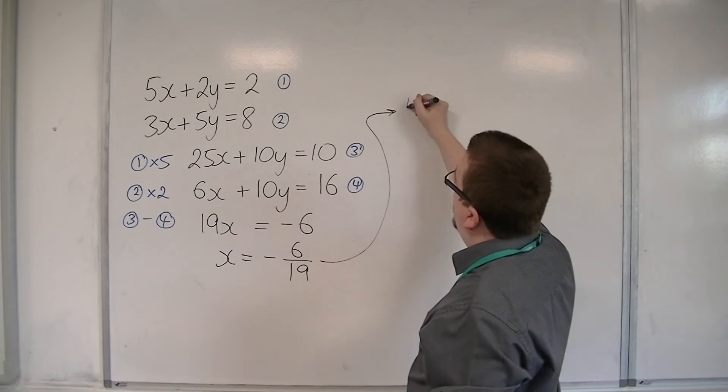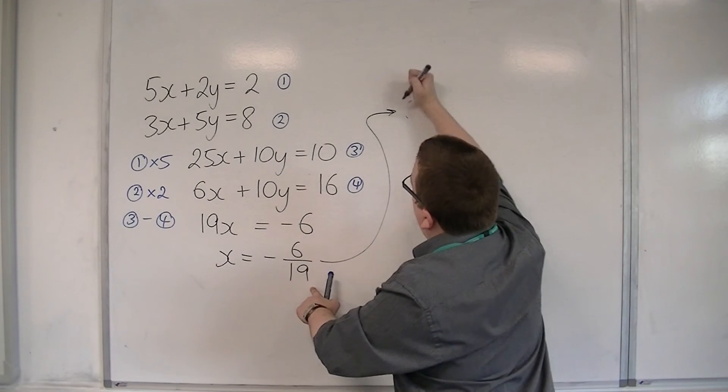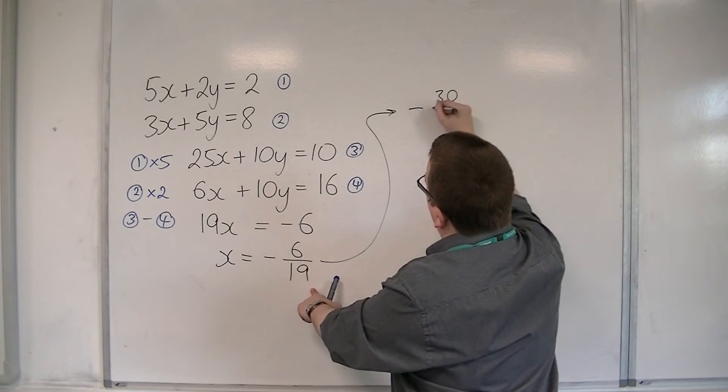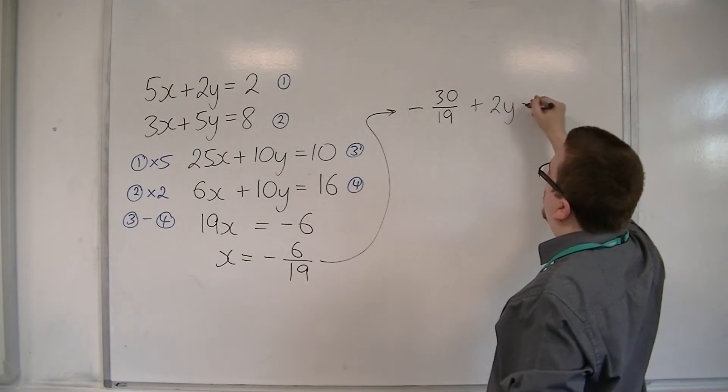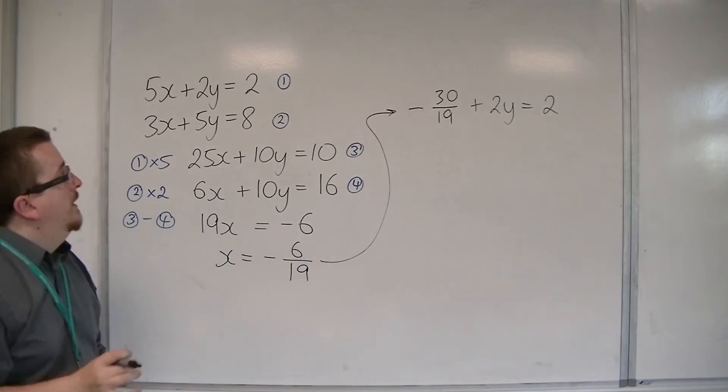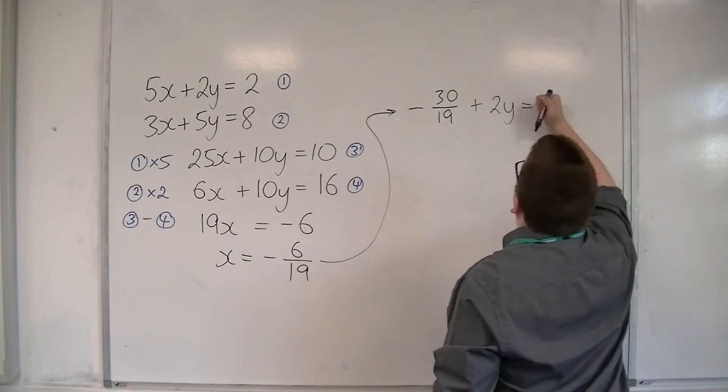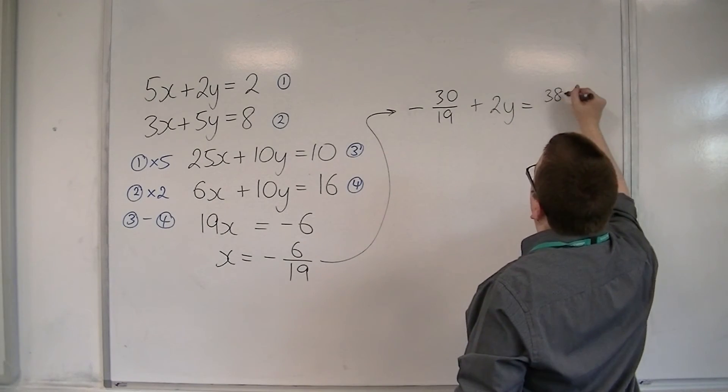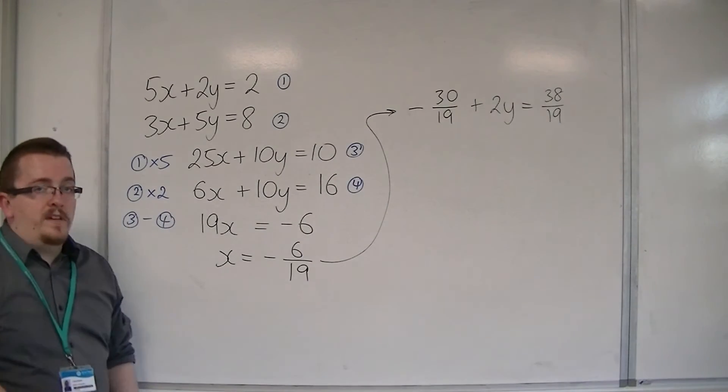We're going to have 5 lots of minus 6 over 19 is minus 30 over 19. Plus 2y is equal to 2. For convenience sake, I'm going to replace the 2 with 38 over 19. Because 2 is 38 over 19.